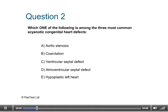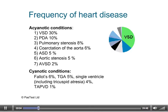Question 2: Moving on to a common question — the following are among the three most common acyanotic congenital heart defects. The list includes both acyanotic and cyanotic heart conditions. Top of the list for acyanotic heart conditions are VSDs, followed by PDAs (patent ductus arteriosus), pulmonary stenosis, coarctation of the aorta, and ASDs. Cyanotic heart conditions include tetralogy of Fallot, transposition of the great arteries, and total anomalous pulmonary venous drainage (TAPVD).